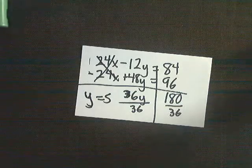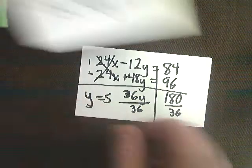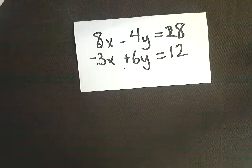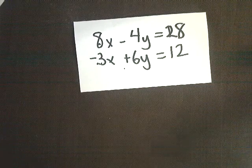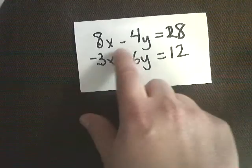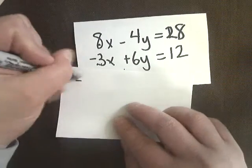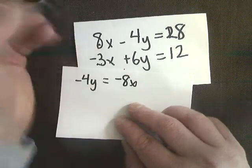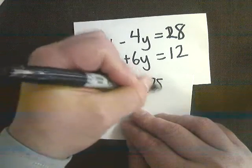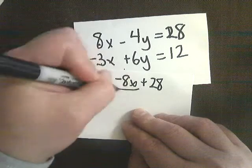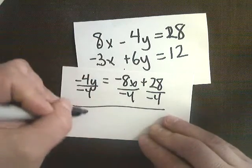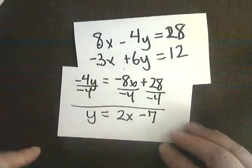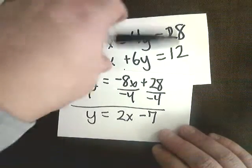Another way you could do it, like I said, there's tons of ways that you can do it, is to just graph them together. You can put them into slope-intercept form. This is after I already moved 8x. Then divide by negative 4. And you get y equals 2x minus 7 for the first one.